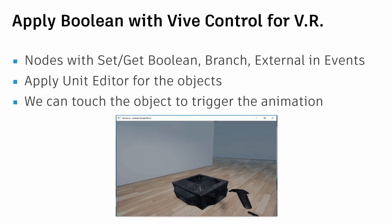In the previous exercise the scene deployed with automatic rotation. Now I want to go further: I want the Vive controller to touch the object and then start the rotation. For this I need a Set Boolean and Get Boolean node to detect collision, then set the logic to trigger rotation. An External In Event node is also necessary. I'll apply these in both the Unit Editor and Level Flow so that touching the object triggers the animation.